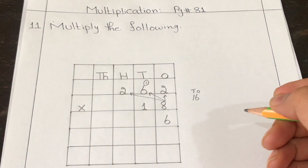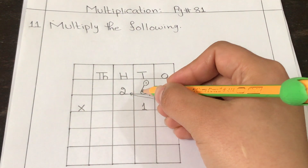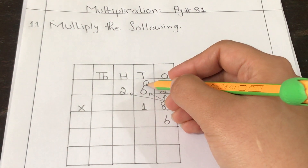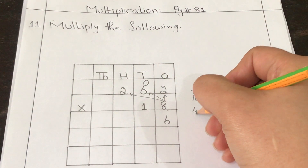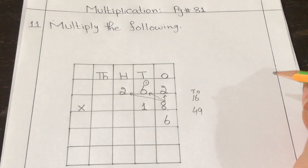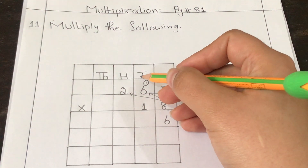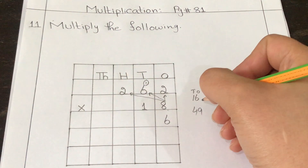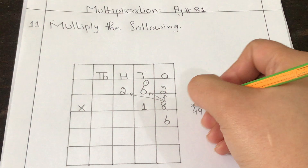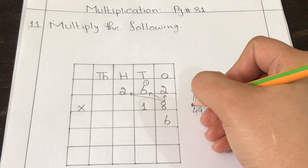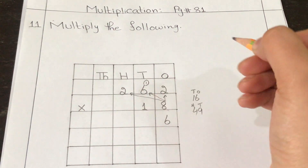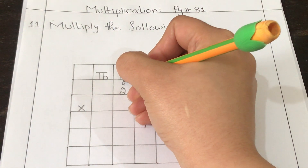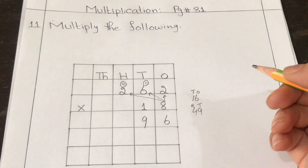Now multiply eight by six: eight sixes are 48, then add your carry — 48 plus 1 is 49. Convert again: since we are multiplying in the tens place, the tens place digit nine is written in the tens column, and the hundreds place digit four is carried to the hundreds column.